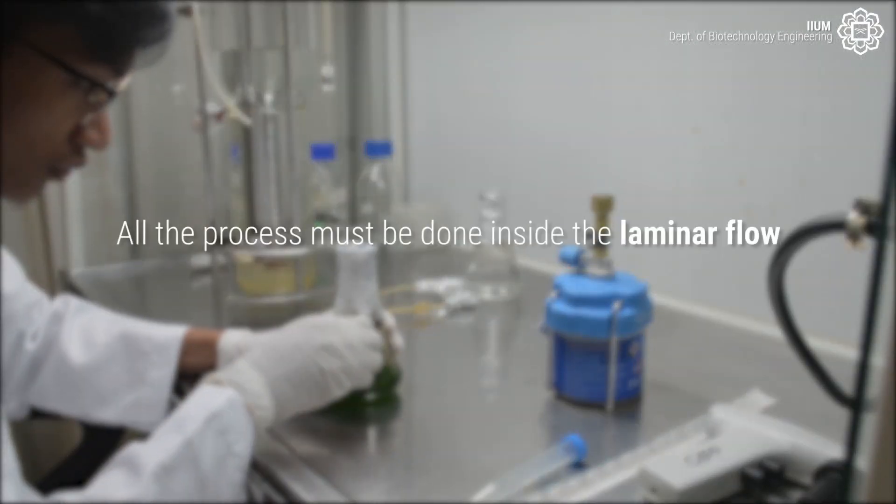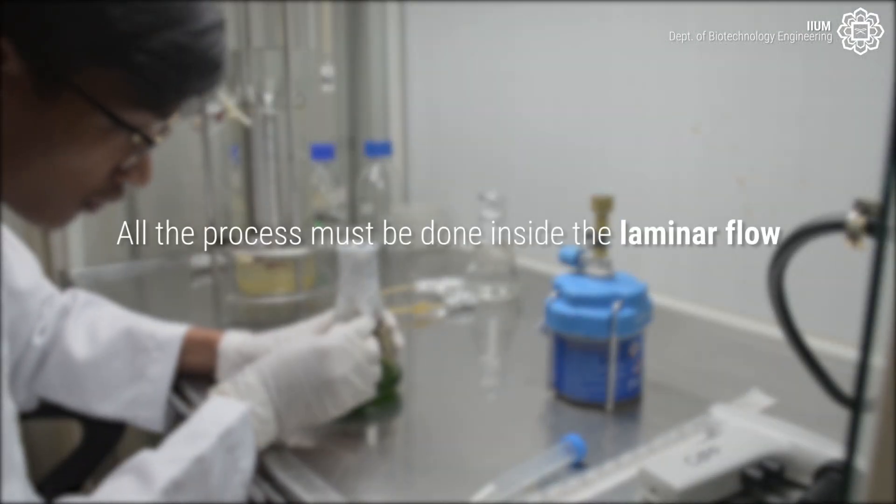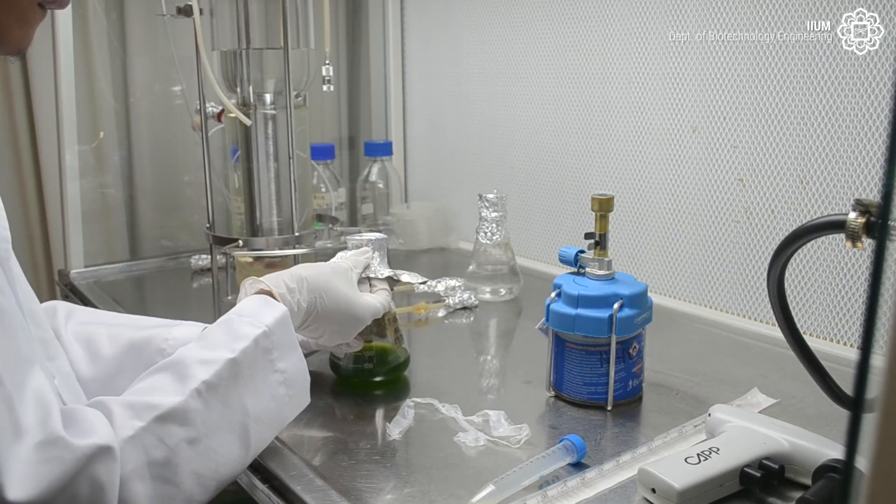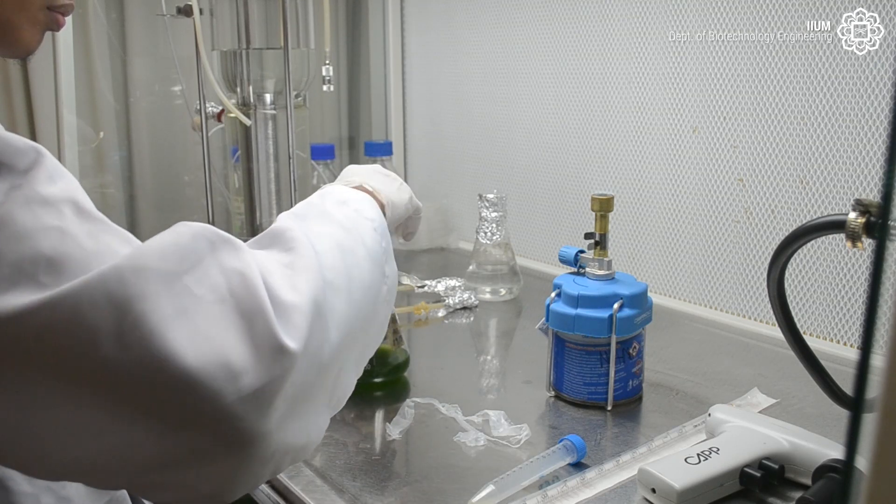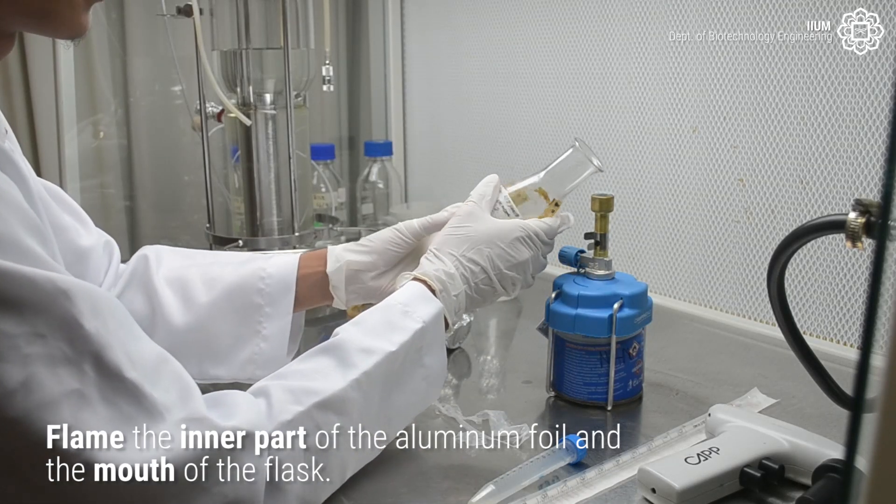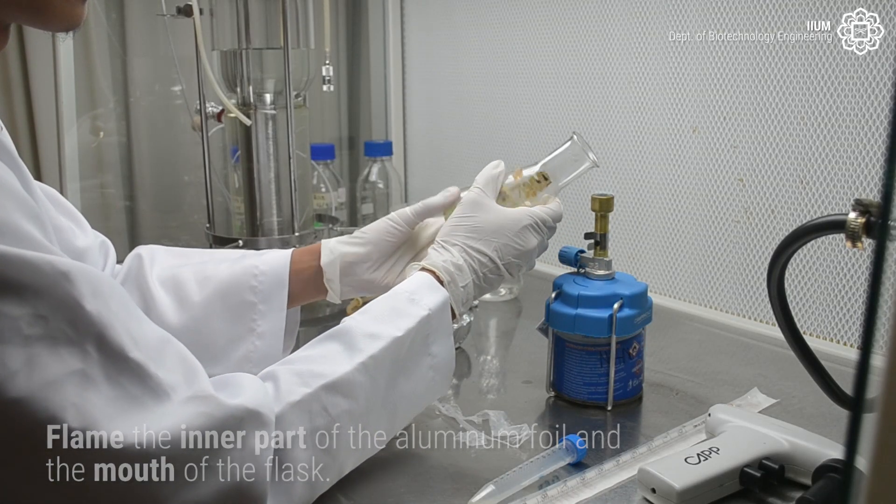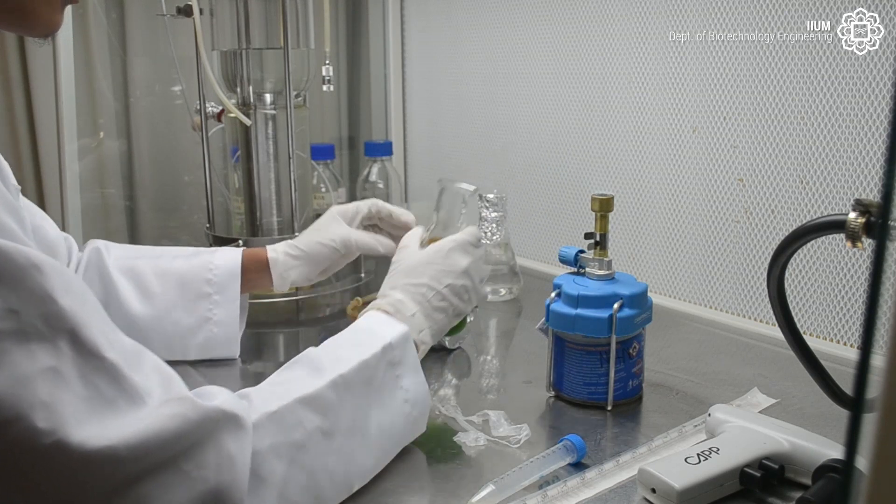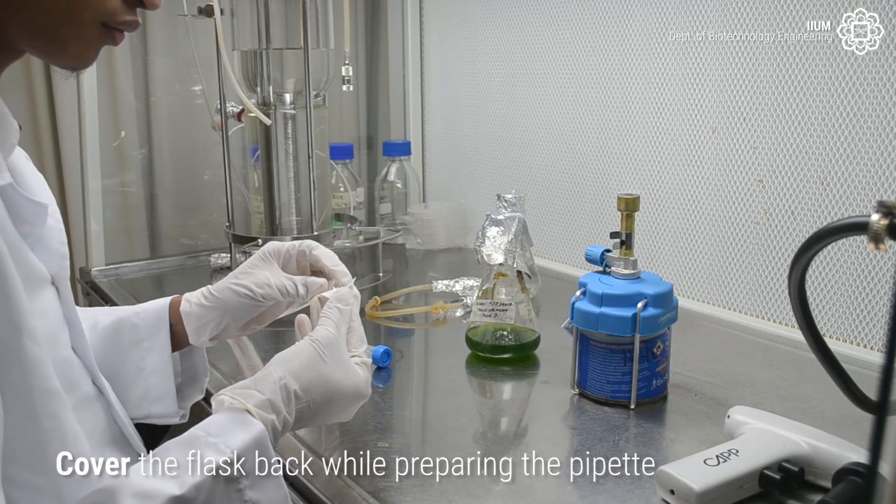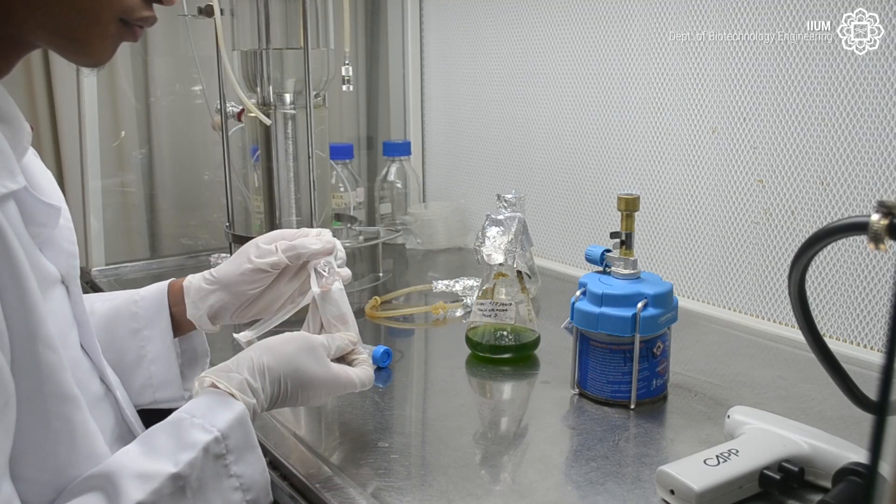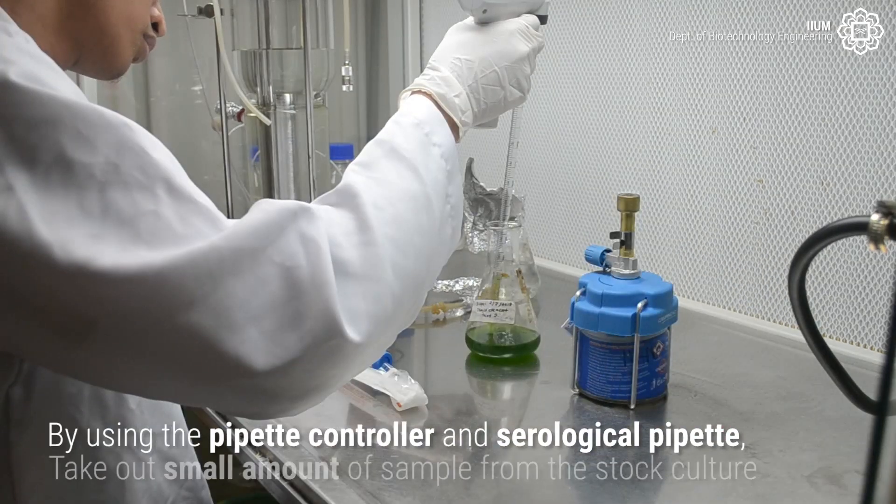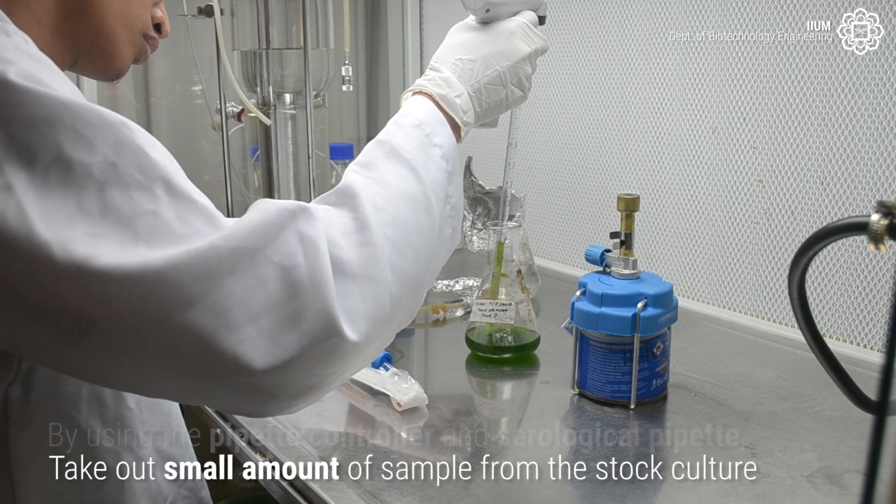All of the process must be done inside the laminar flow. Flame the inner part of the aluminum foil and the mouth of the flask. Cover the flask back while preparing the pipette. By using the pipette controller and serological pipette, take out a small amount of sample from the stock culture.